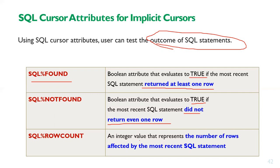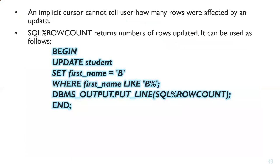SQL%ROWCOUNT is an integer value that represents the number of rows affected by the most recent SQL statement. For example, an implicit cursor cannot directly tell you how many rows were affected by an UPDATE, but SQL%ROWCOUNT returns the number of rows updated.